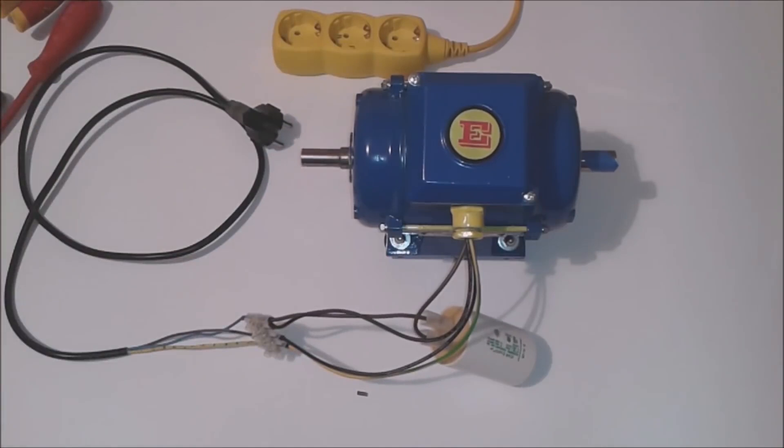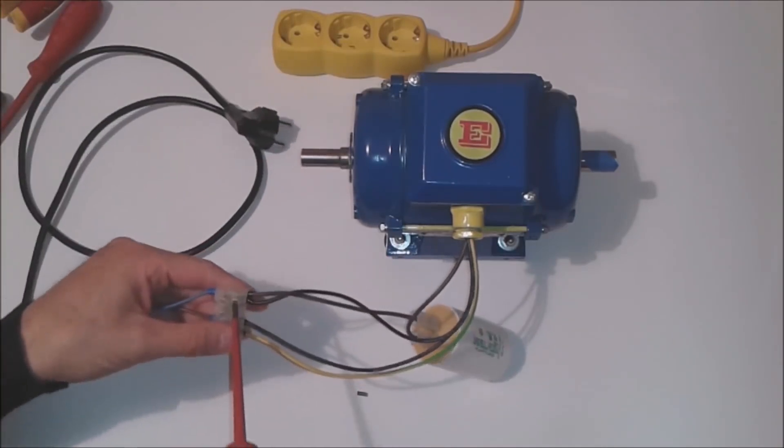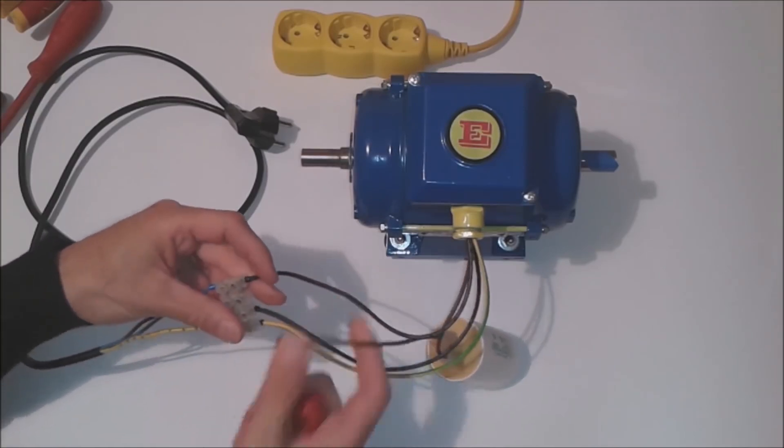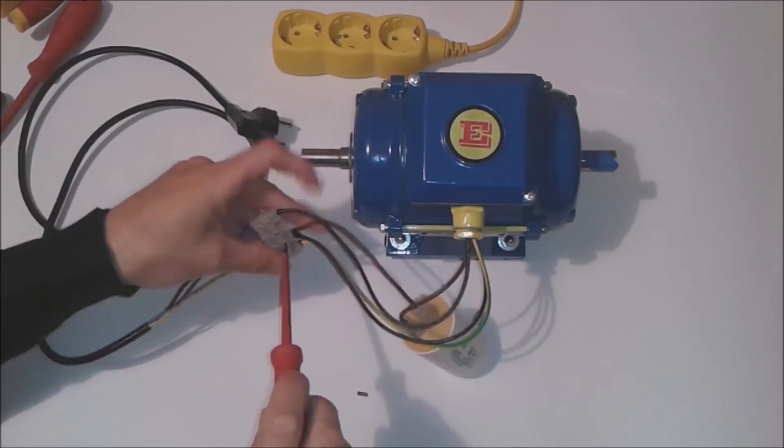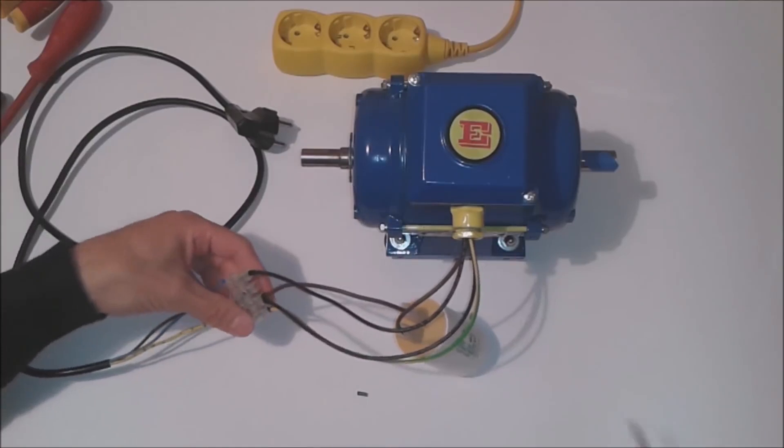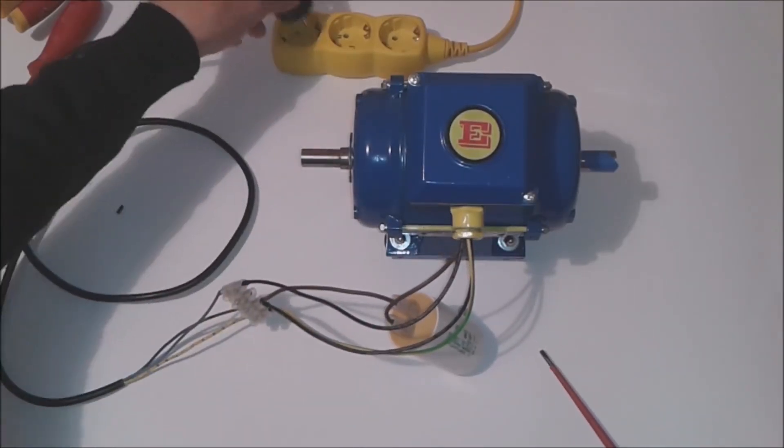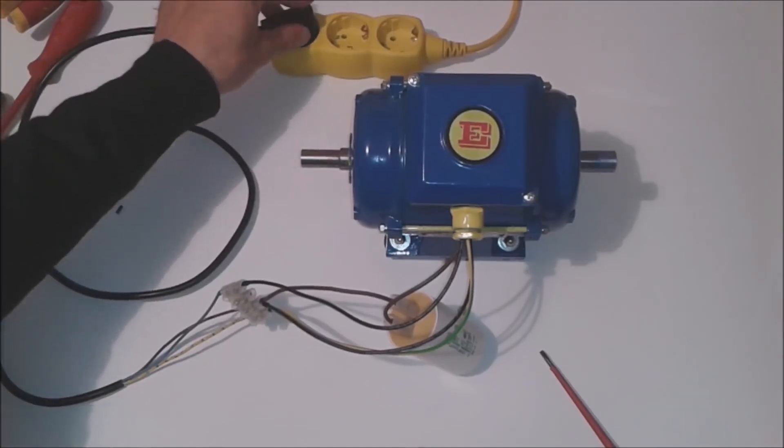If we want to turn it to the opposite side we will switch the conductor from one capacitor to another place. When we have done that we check the directional rotation and here we see that now the electric motor is turning in the other direction.